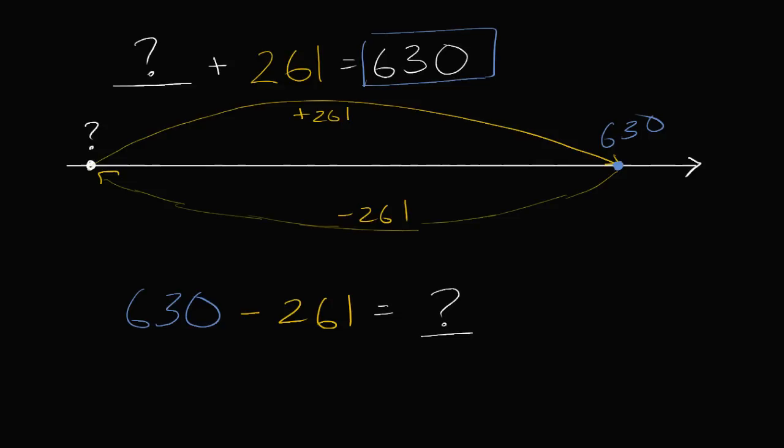So the way I would do it is I would first subtract 200. So I'd first subtract 200. I'm not drawing it perfectly to scale. So minus 200 right over there, which would get me to 430. I can do that in my head.